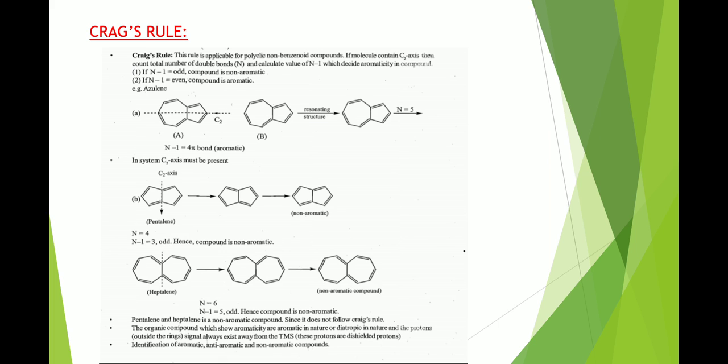Another rule is Craig's rule, which is applicable for polycyclic non-benzenoid systems. A polycyclic non-benzenoid compound must contain multiple rings — more than one — and it does not contain a benzene ring-like structure.